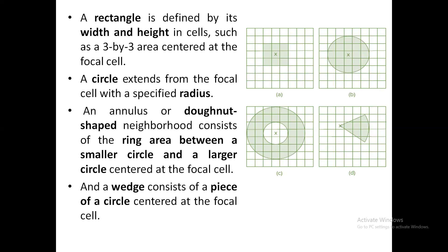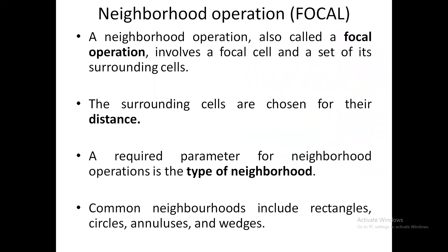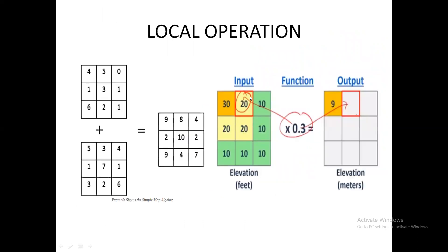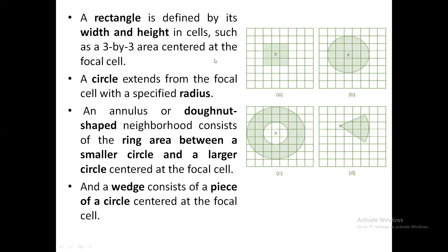To summarize the difference between local operation and focal operation: in local operation, you will be working on only one particular cell at a time — you will work on all the grids, but only after completing one particular cell will you move on to the next. In neighborhood operation, you have a focal cell which is the actual cell you are working on, but you cannot obtain the result using that one cell alone — you depend on the neighborhood cells for the final outcome. In neighborhood operation, you have four types: rectangle, circle, annulus, and wedge.